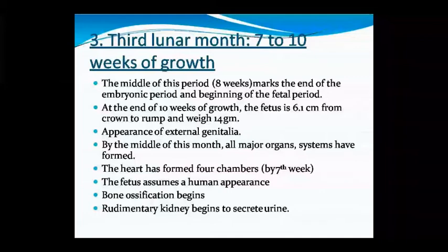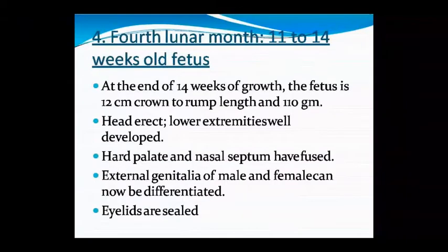Urine secretion begins during this period. To summarize the third lunar month: embryonic period ends at the eighth week, fetal period begins. By the end of the tenth week, the fetus is 6.1 cm in length and 14 grams in weight. External genitalia are forming, all organs and systems are present, the heart is four-chambered, bones are ossifying, and the kidney is producing urine.